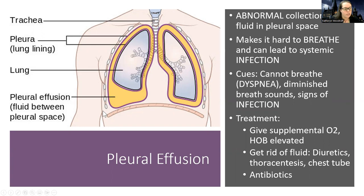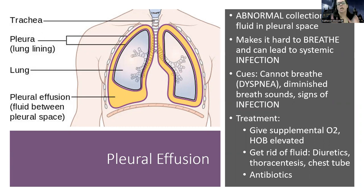Pleural effusion is a complication not just of pneumonia but of multiple conditions. Fluid collects in between the lung lining — the pleural space. This can happen as a result of infection in the lungs, liver problems, or heart problems. The issue is it makes it hard to breathe because the fluid pushes up against the lungs, preventing full expansion. It can also lead to systemic infection — bacteria can accumulate in that space and the fluid itself can become infected.